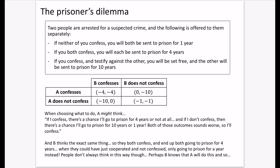Here is the dilemma: two people are arrested for a suspected crime and the following is offered to them separately — they cannot communicate. If neither confesses, both go to prison for one year; that's this cell in the matrix, negative for both A and B since prison is bad. If both confess, they each get four years. The third outcome: if one confesses and testifies against the other, they go free while the other gets ten years. So if A confesses and B doesn't, B gets ten years and A goes free — and vice versa.